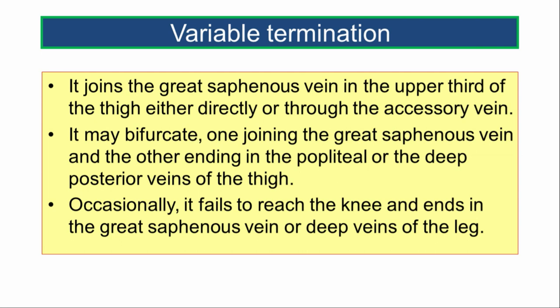The small saphenous vein can have variable termination. It may join the great saphenous vein in the upper third of the thigh, either directly or through the accessory saphenous vein. It may bifurcate, with one branch joining the great saphenous vein and the other ending in the popliteal or deep posterior veins of the thigh. Occasionally it fails to reach the knee and ends in the great saphenous vein or in the deep veins of the leg.